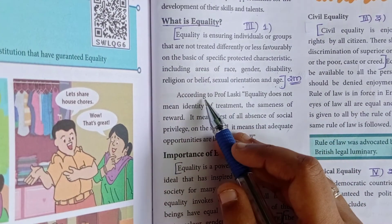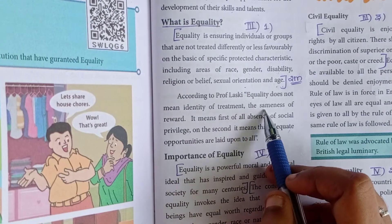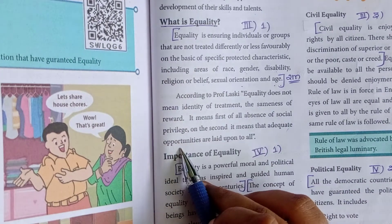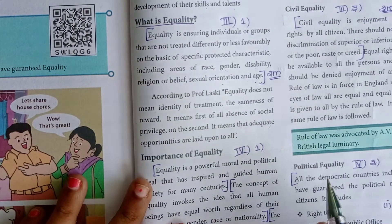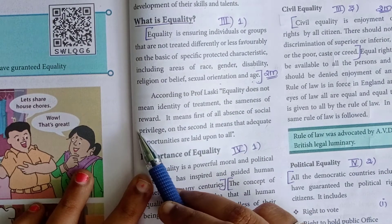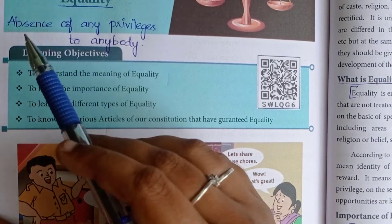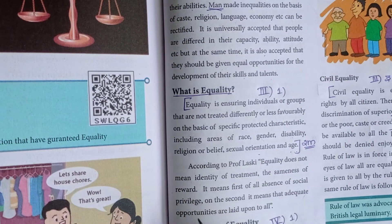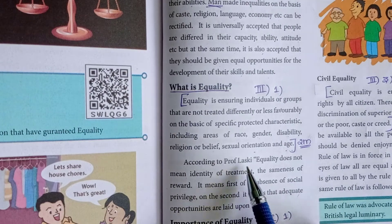Next paragraph: According to Professor Lasky, equality does not mean identity of treatment or the sameness of reward. It means first, the absence of social privilege, and second, that adequate opportunities are laid open to all. He also says absence of social privilege and that everyone should be given equal opportunities — these are the perspectives of Professor Lasky about equality.